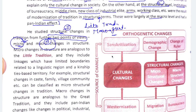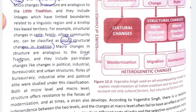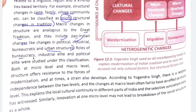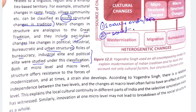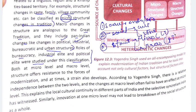Micro changes are at the folk or local tradition level. Macro changes are at the urban and pan-India level — changes in political, industrial, bureaucratic, and urban structures. The roles of bureaucracy, industrial elite, and political elite were studied under this macro classification. So Yogendra Singh gave us three analytical points: source of change (endo/exo), level of change (cultural/structural), and scale of structural change (micro/macro).